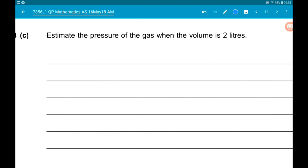So we now know that P is 93.3 times V to the minus 1.4. Substitute V equals 2 into that.